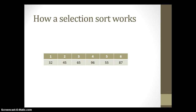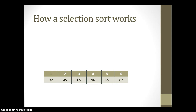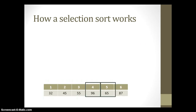We keep going, taking the first element of what's still unsorted and getting it into the correct position. Working with position three: comparing three and four, 65 is less than 96, so we don't do anything. Comparing three and five, 65 is greater than 55, so we do a swap. Comparing three and six — nothing needs to be swapped. Now position four: comparing four and five, 96 is bigger than 65, so we swap. Comparing four and six, 65 and 87 — those are fine.